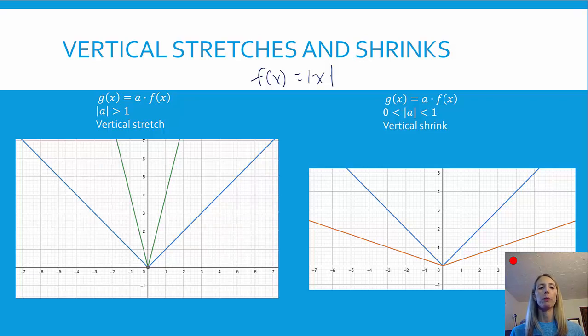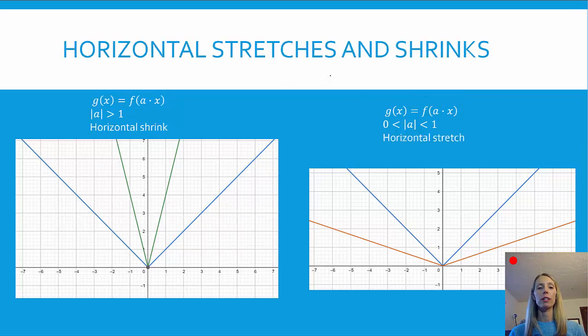You see the stretch, there's that multiplier and it stretched it up and brought it closer to that y-axis. So that indicates to us that the coefficient of that function is bigger than 1. On the other hand, you'll notice that on the right, we still have that blue parent function, and the orange is a vertical shrink. So that means that the coefficient of that function is somewhere in between 0 and 1. So those are the vertical stretches and shrinks.